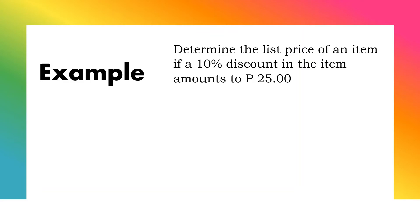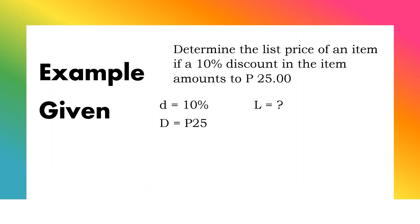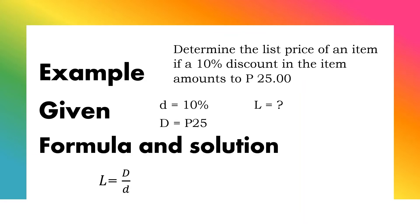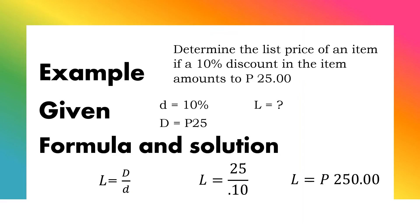Another example: determine the list price of an item if a 10% discount amounts to 25 pesos. The given are: discount rate of 10% and trade discount of 25 pesos. We are looking for the list price. Using the formula, list price equals trade discount divided by discount rate: 25 divided by 10%. The list price of the item is 250 pesos.